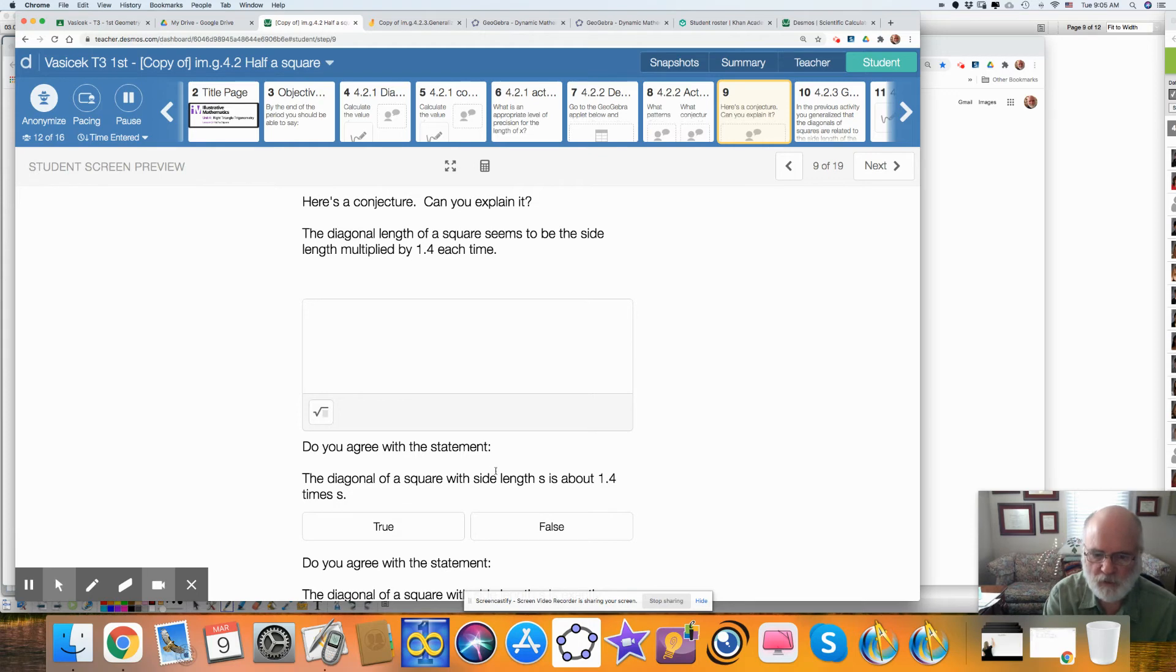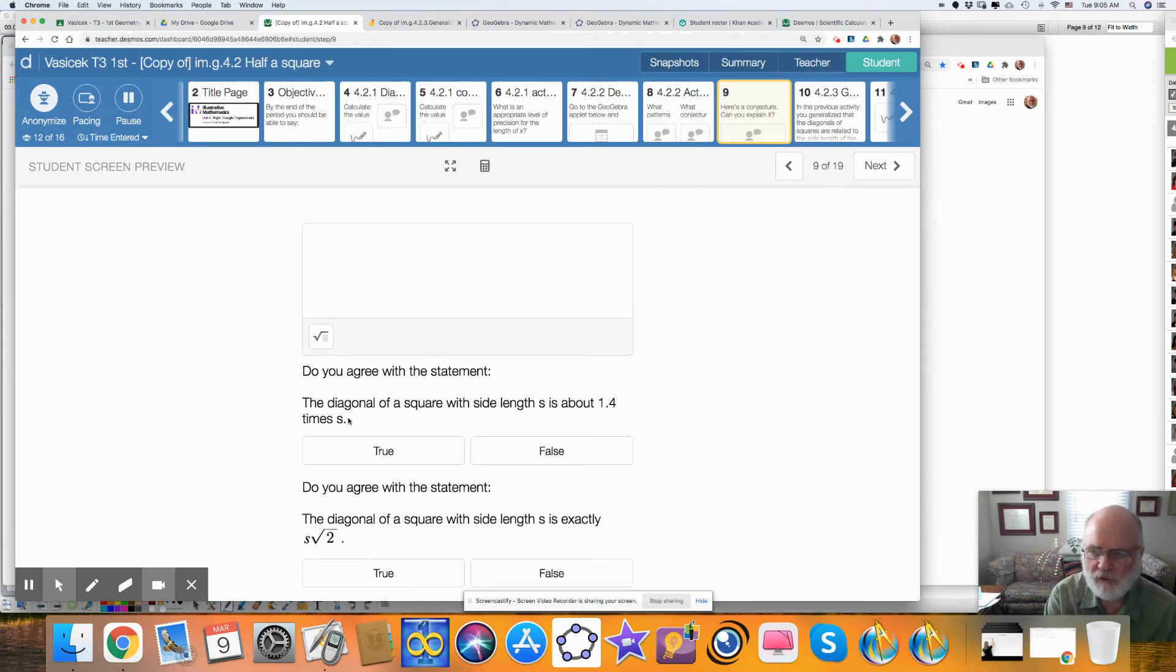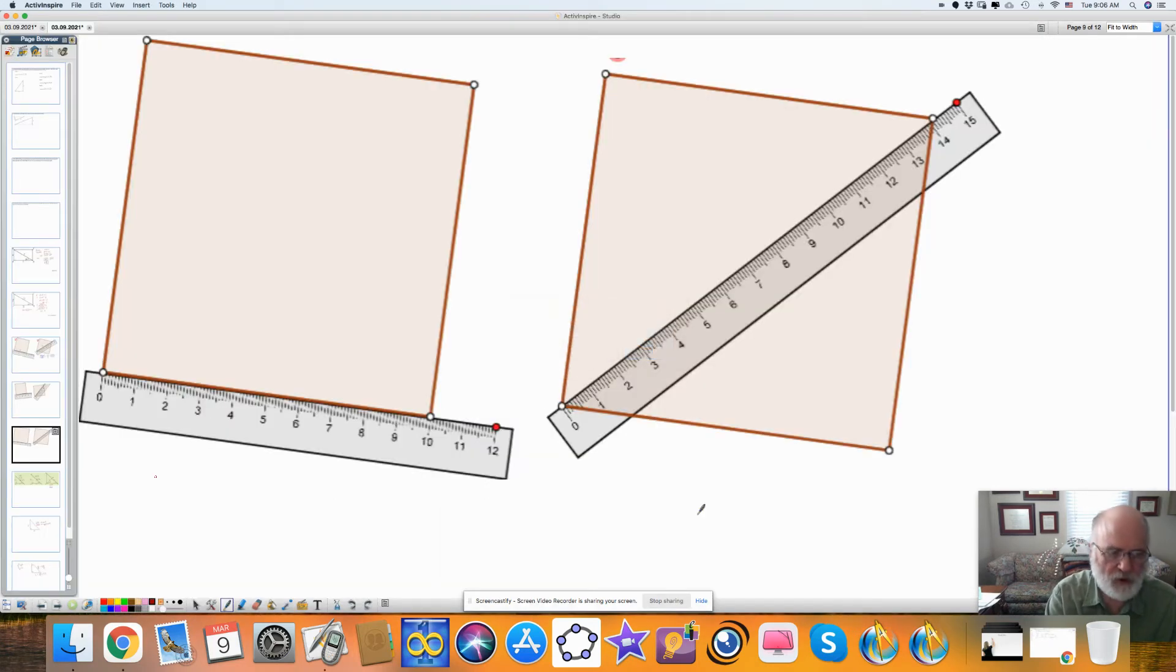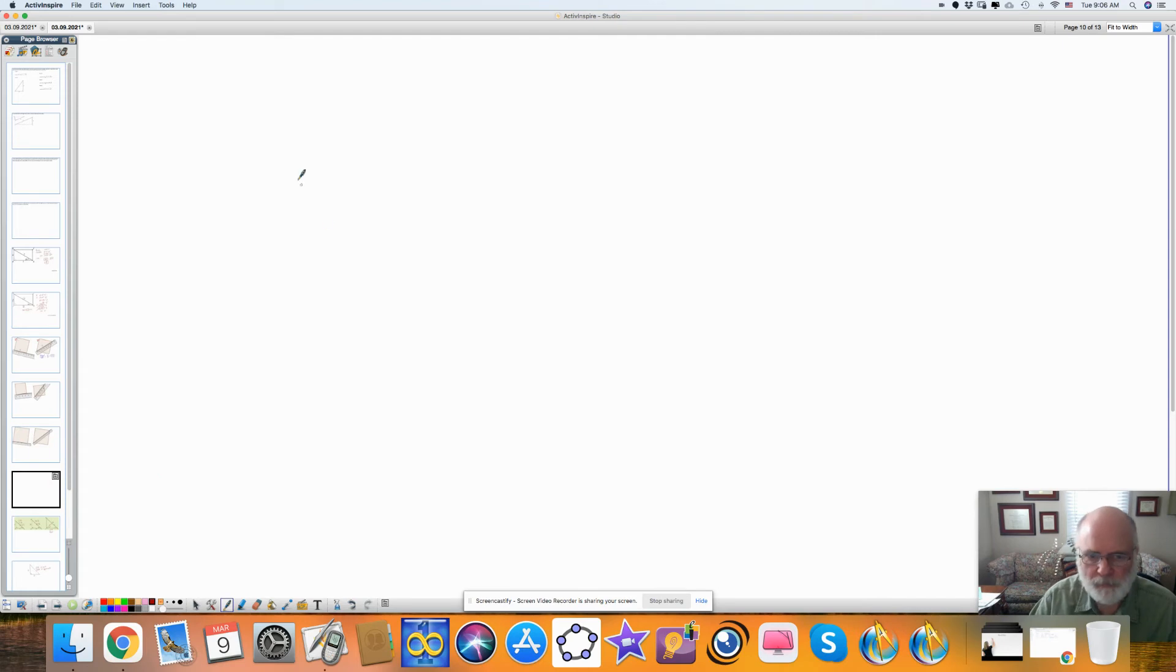So here, what we're doing is the conjecture. The conjecture could be the diagonal of a square seems to be the side length multiplied by 1.4, every time it's multiplied by 1.4. Do you agree with this statement, that the diagonal of a square with the side length s is about 1.4 times s? How about this statement? The diagonal of a square with side length s is exactly s times the square root of 2.